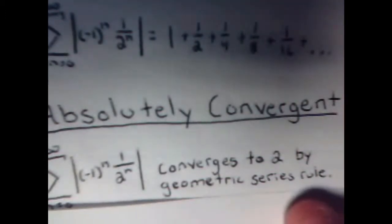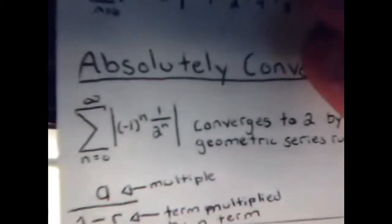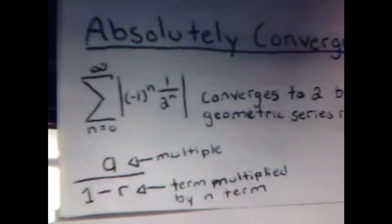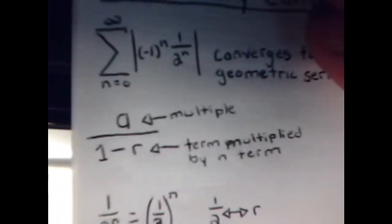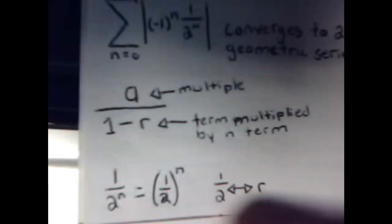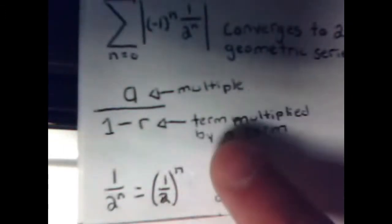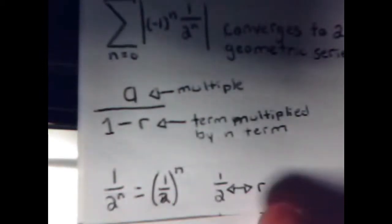It converges by the geometric series rule, and it converges to two. We're looking at n equals zero to infinity of the absolute value of the series. In the geometric series rule, A is a multiple times the repeated factor, and r is what's being raised to the nth power. Here, r equals one-half, since one over two to the n equals one-half to the n. A equals one because there's no multiple. Plugging in: one divided by one minus one-half equals one divided by one-half, which equals two.